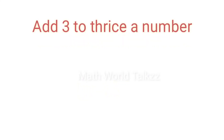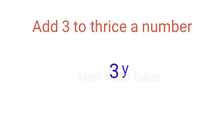One more question: 'add 3 to thrice a number.' Thrice a number means 3 into a number. We can take that number as y, so thrice a number is 3 into y, which is 3y. We need to add 3 to that, so we can write 3 plus 3y.